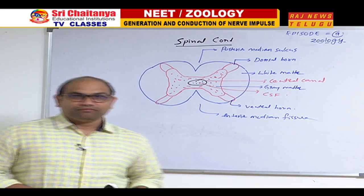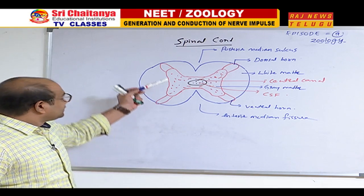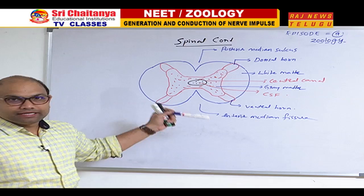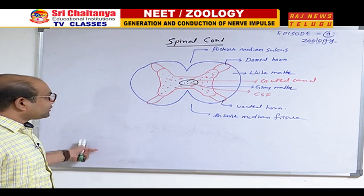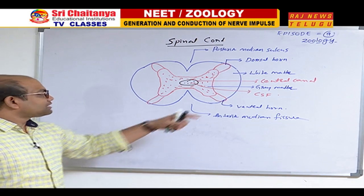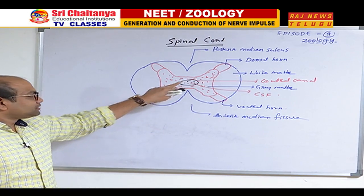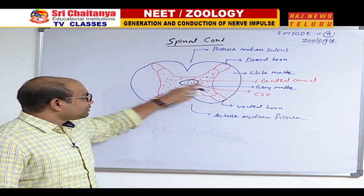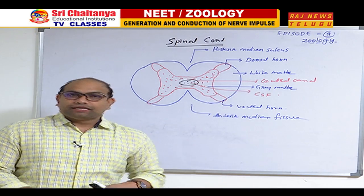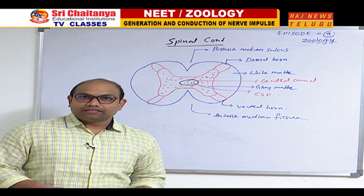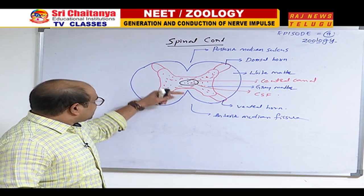Good afternoon dear students. In the last class I discussed about the spinal cord. Let me synchronize the previous points. The spinal cord is a longitudinal structure having different parts like posterior median sulcus, anterior median fissure, outer white matter and inner gray matter, and a central canal filled with cerebrospinal fluid. The outer white matter has myelinated axons; the gray matter has non-myelinated axons and cell bodies with Nissl granules.